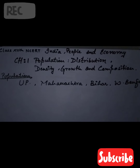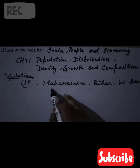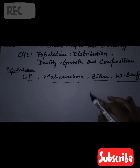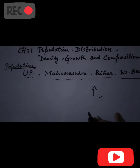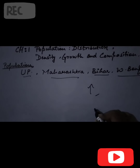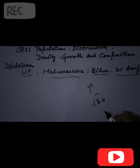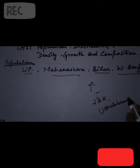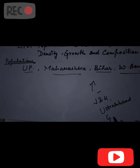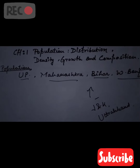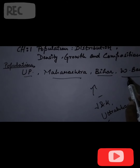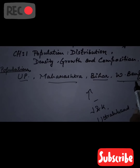If we talk about population, states like UP, Maharashtra, Bihar, and West Bengal have more population. On the other side, states like Jammu and Kashmir and Uttarakhand have a very high geographical area but the population is very low compared to these states. These four main states — UP, Maharashtra, Bihar, and West Bengal — have relatively high population.